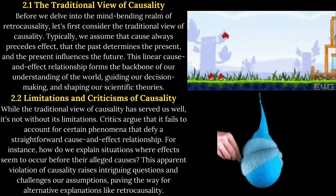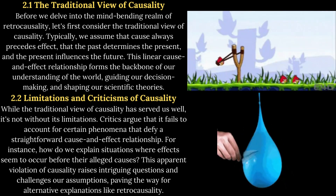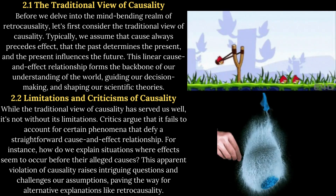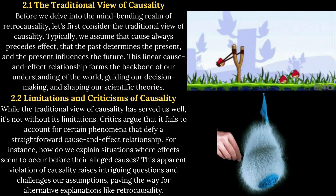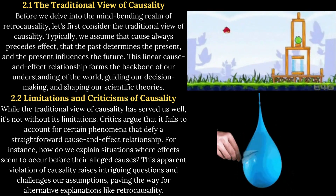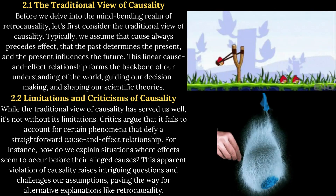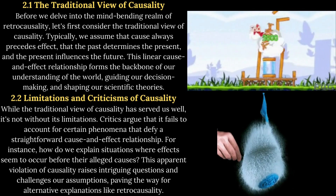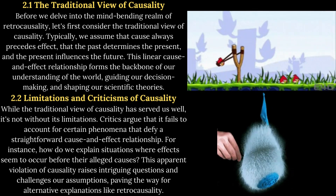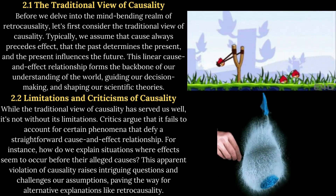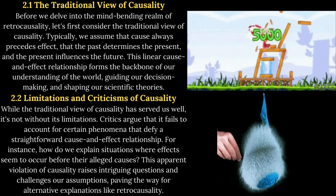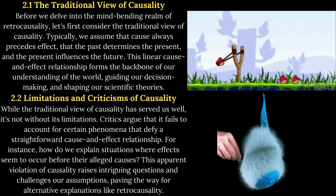While the traditional view of causality has served us well, it's not without its limitations. Critics argue that it fails to account for certain phenomena that defy a straightforward cause-and-effect relationship. For instance, how do we explain situations where effects seem to occur before their alleged causes? This apparent violation of causality raises intriguing questions, paving the way for alternative explanations like retrocausality.